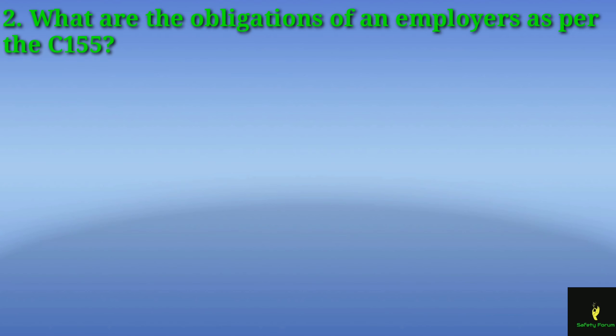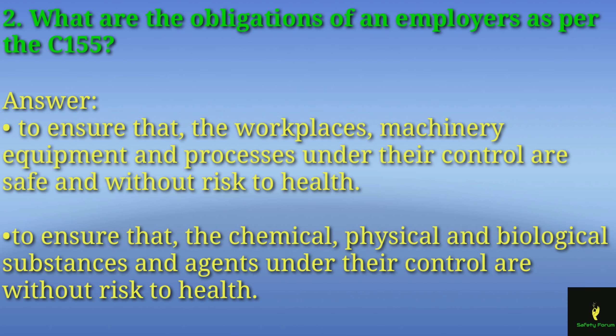The second question is: what are the obligations of an employer as per C155 — Convention 155? As per Convention 155, employers must ensure that all workplaces, machinery, equipment, and processes under their control are safe and without any risk to the health of workers at the site.